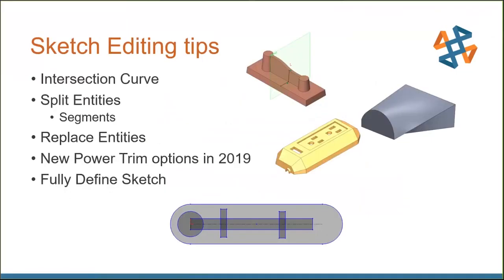Now for some sketch editing examples. One of my favorite SOLIDWORKS sketch commands is the Intersection Curve — you can literally intersect anything in a sketch: a reference plane and model faces in a 2D sketch, or surface bodies resulting in a 3D sketch. Next we'll look at a twisted loft example — a half-round to a rectangle — where things don't work out well. That can be managed with the Split Entities command or sketch segments.